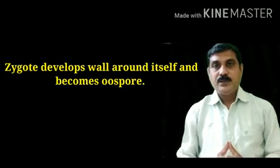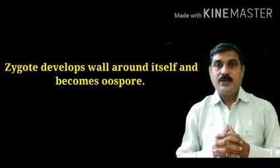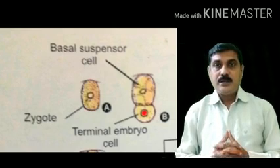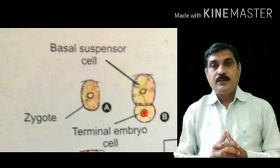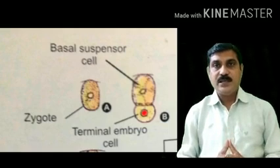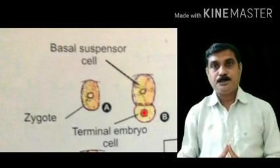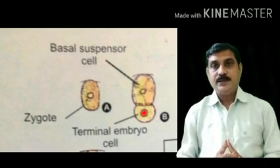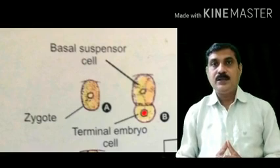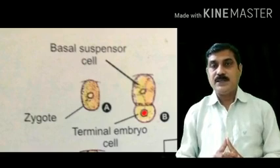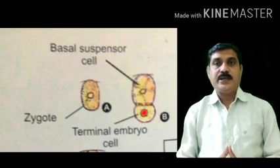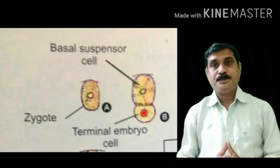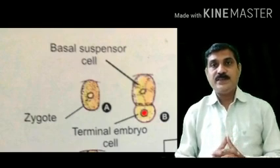This cell, called the oospore, is diploid and undergoes an unequal division, forming two cells: one large cell and one small cell. The large cell is present towards the micropylar end, known as the basal cell or suspensor initial cell. The small cell is present towards the chalaza, also known as the embryonal cell or initial embryo cell.